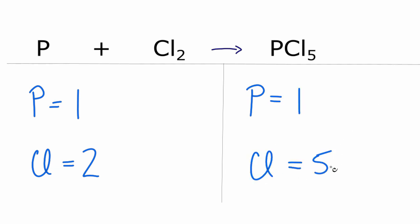It's a little bit difficult because we have odd numbers — we have five and two here. To resolve that, I'm going to multiply this phosphorus pentachloride, this PCl5, by two.